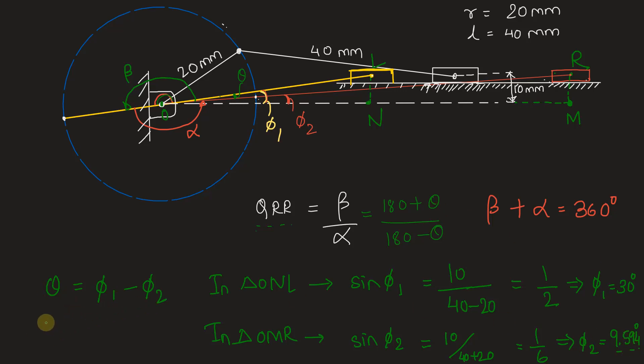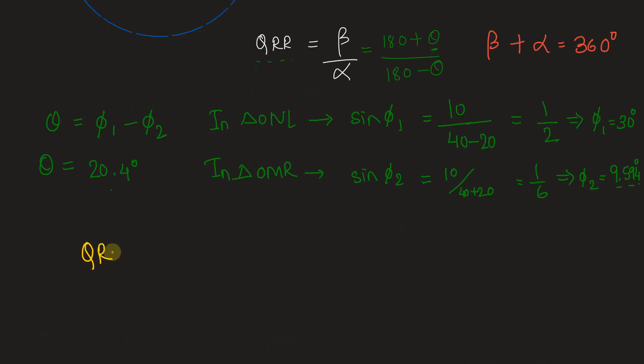Now let's put these values of phi 1 and phi 2 here and find out theta. Theta is nothing but 30 minus 9.594, which is 20.4 degrees. We have theta now. Final step: put theta here and find out the QR.